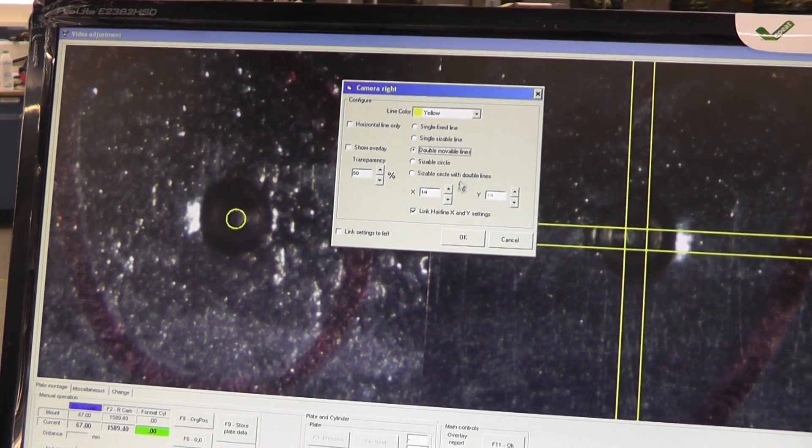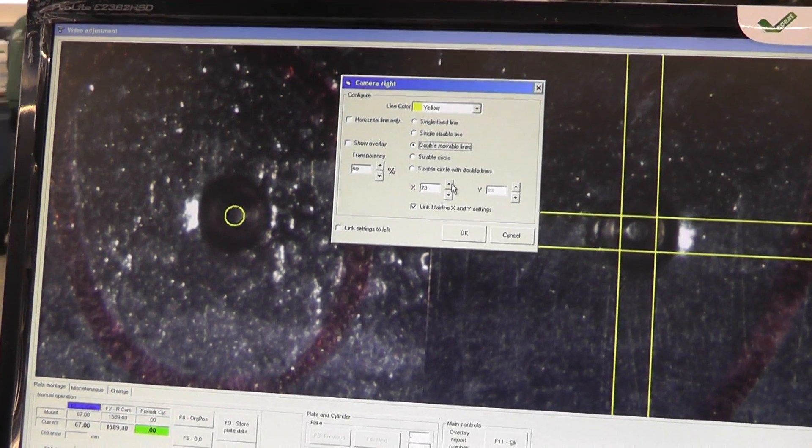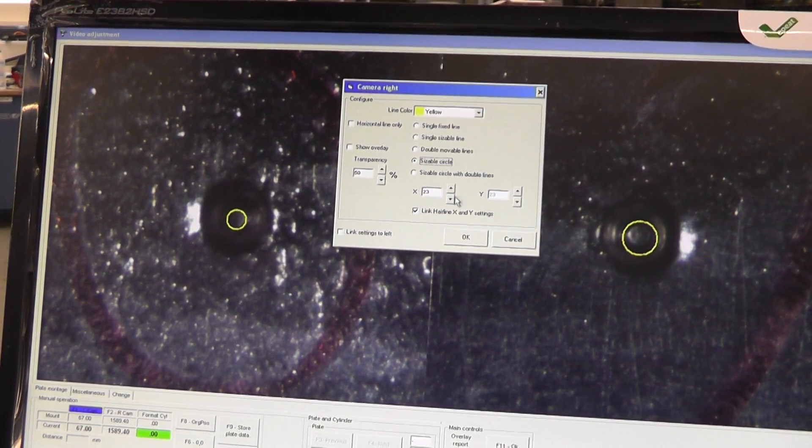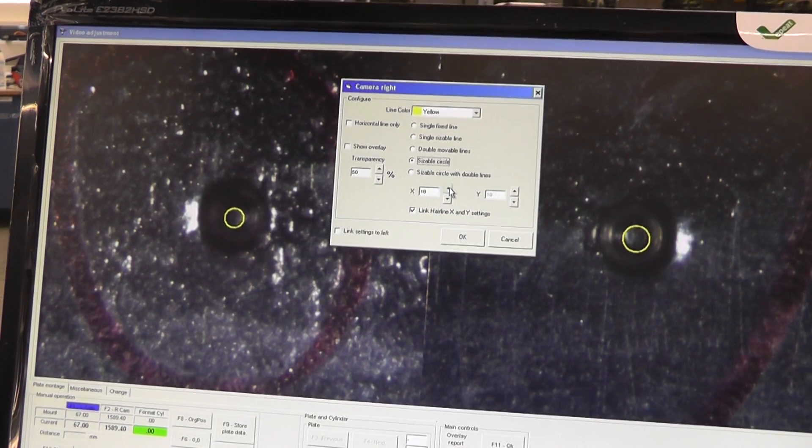You can have double lines like this, you can also change the size of that, and you can have a circle, change the size.